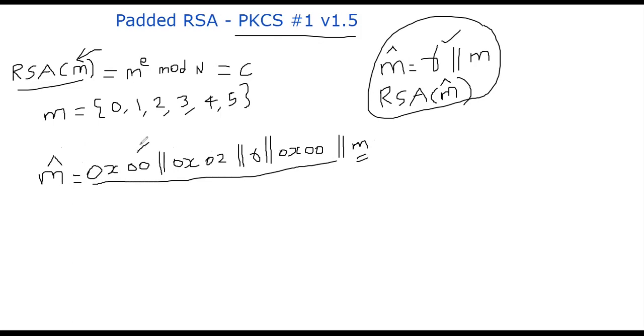By putting a 0 in the front, you know for sure m cap will be an element in z star n, because you have a 0 in the beginning. So m cap belongs to, at high probability, it will be relatively prime with a very high probability in z star n. So that's not a problem.